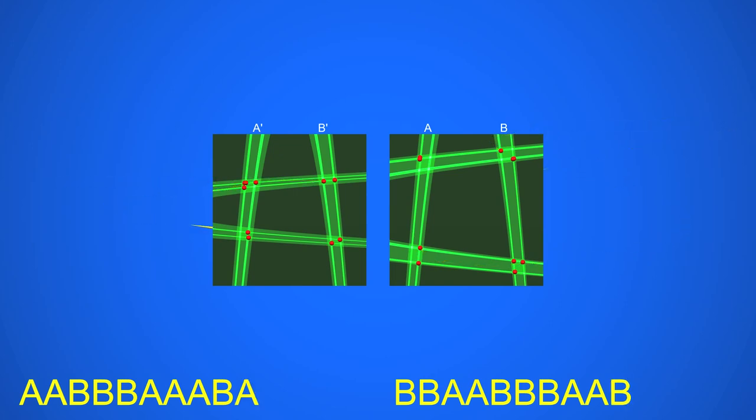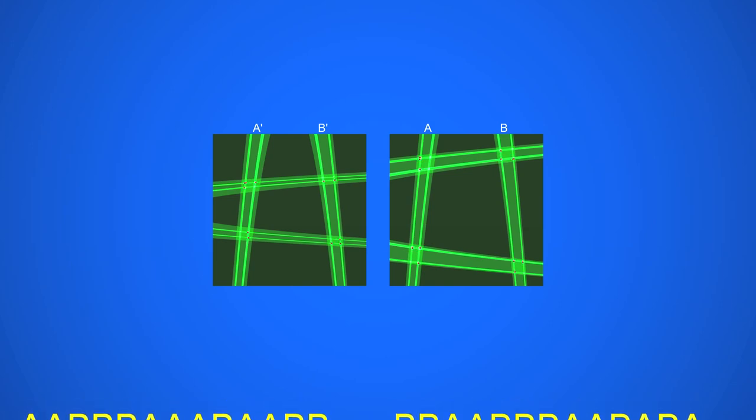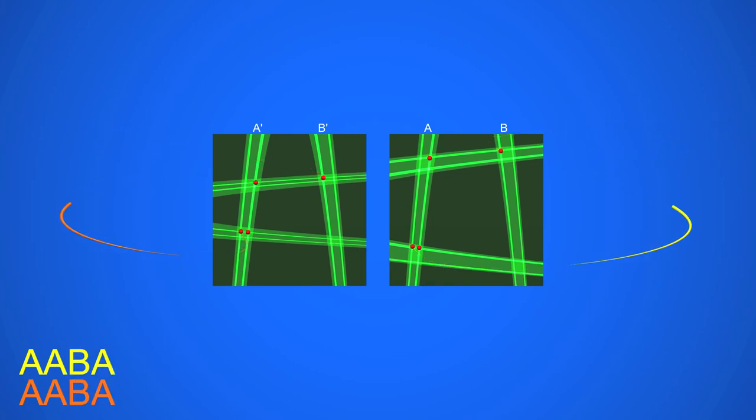In fact, Smale shows that the movements on the two horseshoes are somehow identical. Look, the two trajectories, right and left, follow the same choreography. They visit the same A, A prime, and the same B, B prime. We can match any trajectory of the second horseshoe to some trajectory on the first horseshoe, and vice versa. It is in this sense that the structure is stable.